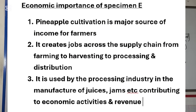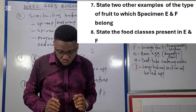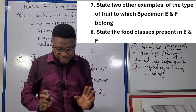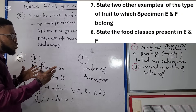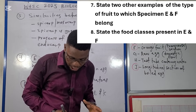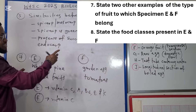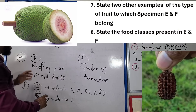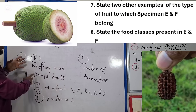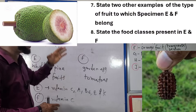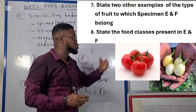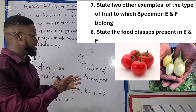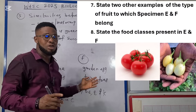Question seven asks for two other examples of the type of fruit to which specimen E and F belong. For specimen E, the pineapple — a multiple fruit — other examples are whistling pine and breadfruit. For specimen F, the orange — a berry — other examples are garden egg and tomatoes.